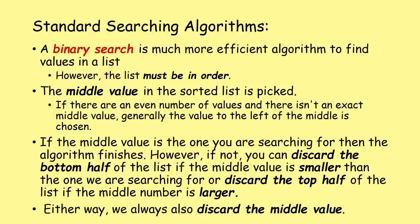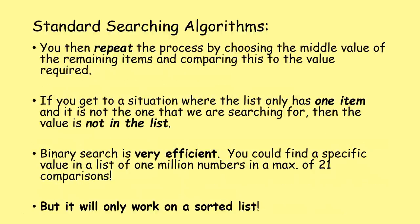If the middle value is not what you're looking for, you discard the bottom half of the list if the middle value is smaller than the one you're searching for, or discard the top half if the middle number is larger. Either way, you also discard the middle value each time. You then repeat the process by choosing the middle value of the remaining items. If you get to a situation where the list has only one item and it's not the one you're searching for, the value is not in the list.